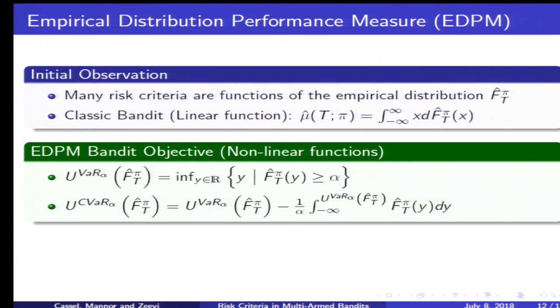For example, for the value at risk and conditional value at risk, this function U which works on the empirical distribution would look like these, which may seem a bit intimidating but they're not too hard to get to. Essentially what we now have is a reduced problem where we instead want to analyze the properties of U in conjunction with the distributions F superscript I such that we can get regret analysis and algorithms.